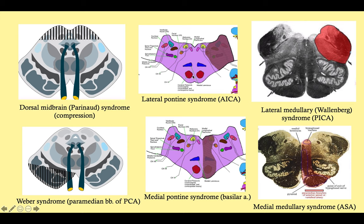The Step will probably give you a question where they tell you a patient has a certain constellation of symptoms — say contralateral paralysis on one side, contralateral proprioception loss, and on the opposite side maybe some tongue weakness — and from there you'll either need to identify what artery is infarcted or they may give you a histologic specimen diagram and ask you to point to where the lesion is, with areas labeled one through five.